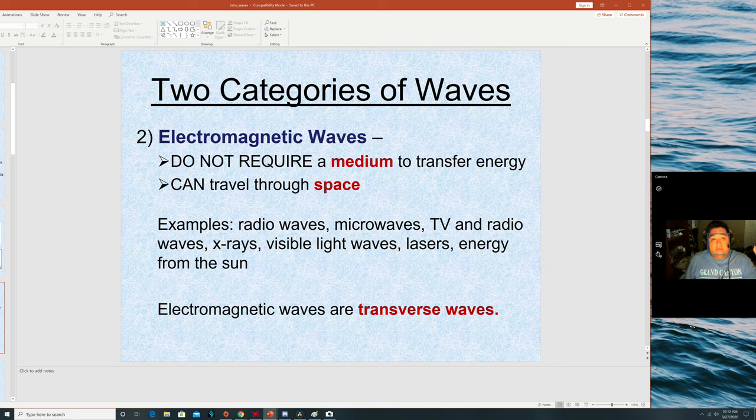The second type of wave is electromagnetic waves. They do not require a medium to transfer energy. They can travel through space. The Wi-Fi that you're probably using to watch this. The x-rays that you got at the dentist. And my personal favorite is the light that's shining off of this face and making me look a little extra red than usual. Those are all electromagnetic waves.